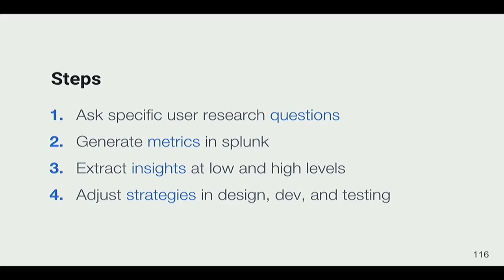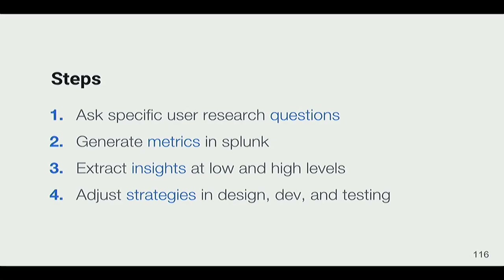For each of the insights I'll explain, I'm going to go through four examples. With each, I'll explain the user research question we asked, what metrics we saw using Splunk — which is a product used to go through data and create metrics — and then insights we got, and how we used those to adjust strategies for our design, dev, and testing. I'm also going to use a key showing whether each insight informs strategies specifically for the search project, for our broader MASS team, or for NASA as a whole.